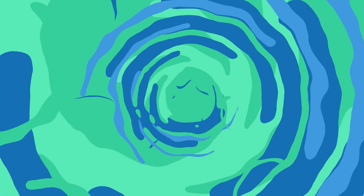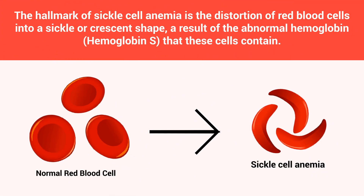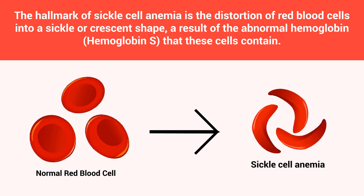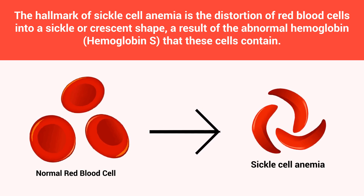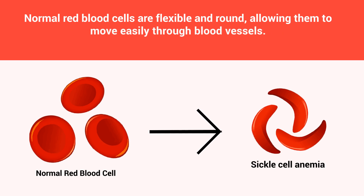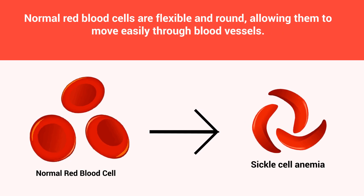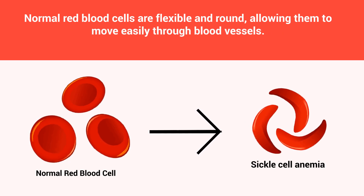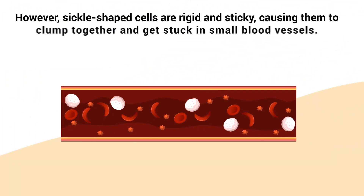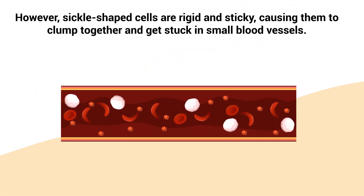The hallmark of sickle cell anemia is the distortion of red blood cells into a sickle or crescent shape, a result of the abnormal hemoglobin that these cells contain. Normal red blood cells are flexible and round, allowing them to move easily through blood vessels. However, sickle-shaped cells are rigid and sticky, causing them to clump together and get stuck in small blood vessels.